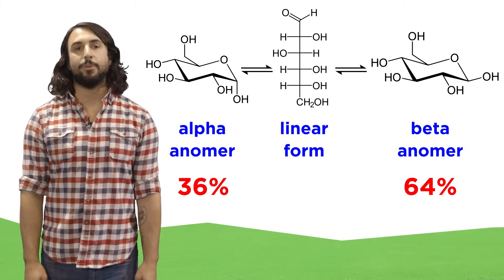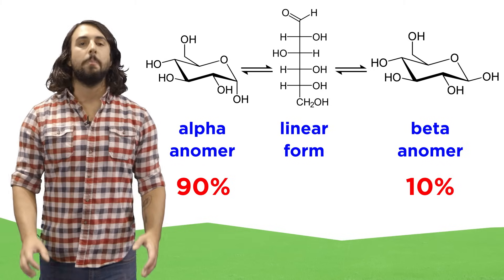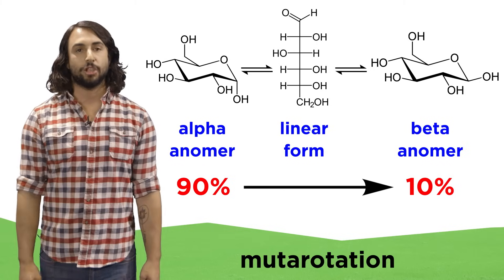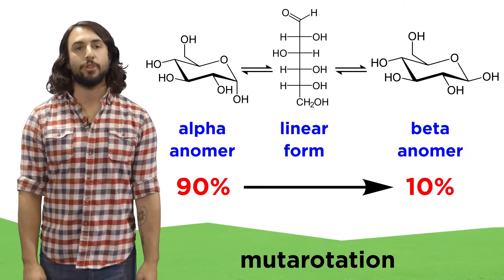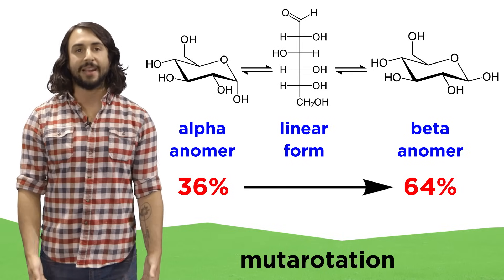For this reason, a sample of glucose that has more of the alpha form than the beta will undergo mutarotation, which is a shift towards equilibrium values for the two anomers, which in the case of glucose is about two to one in favor of the beta anomer.